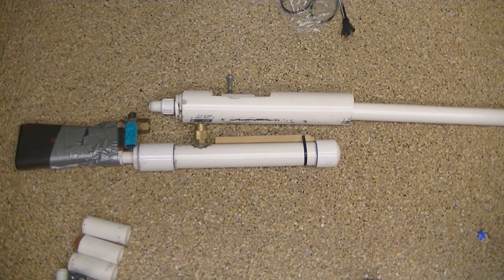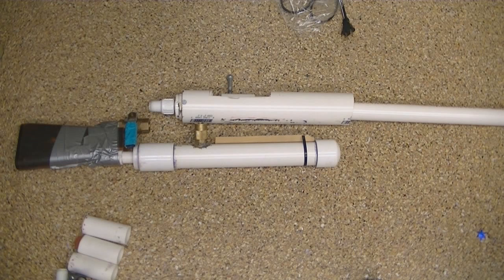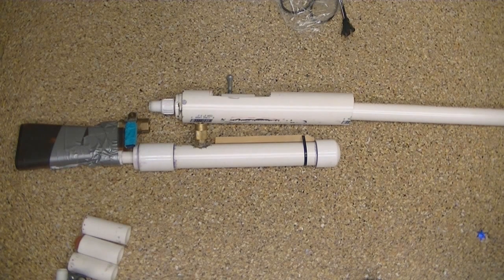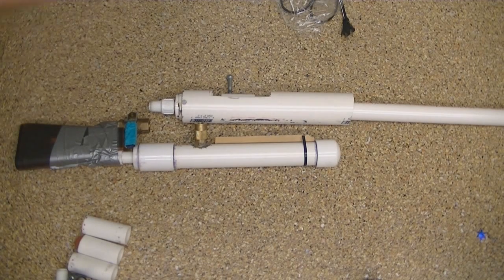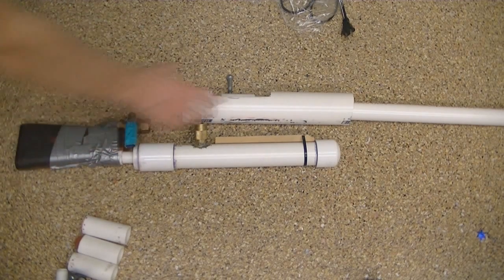This is my breech-loaded air cannon. A lot of people have been asking how I made it, so I'm going to show you how it's assembled. It's basically just made of PVC pipes and fittings that fit inside of each other. I'm mostly just going to focus on the moving part up here.